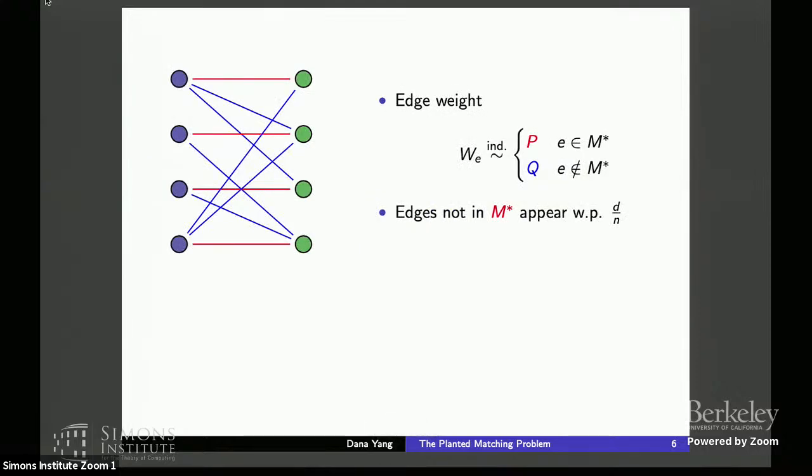And in fact, in our analysis, we're no longer restricted to considering only exponential edge weights. Instead, we can allow the true edge weights and the fake edge weights to follow arbitrary distributions P and Q. And we not only consider the complete graphs, but we actually consider also sparse graphs as well by assuming that the edges, the fake edges, they only appear with probability D over N, where D can be as small as a constant, which corresponds to the sparse graphs. And it can be as large as all the way up to N, which corresponds to the complete graphs.